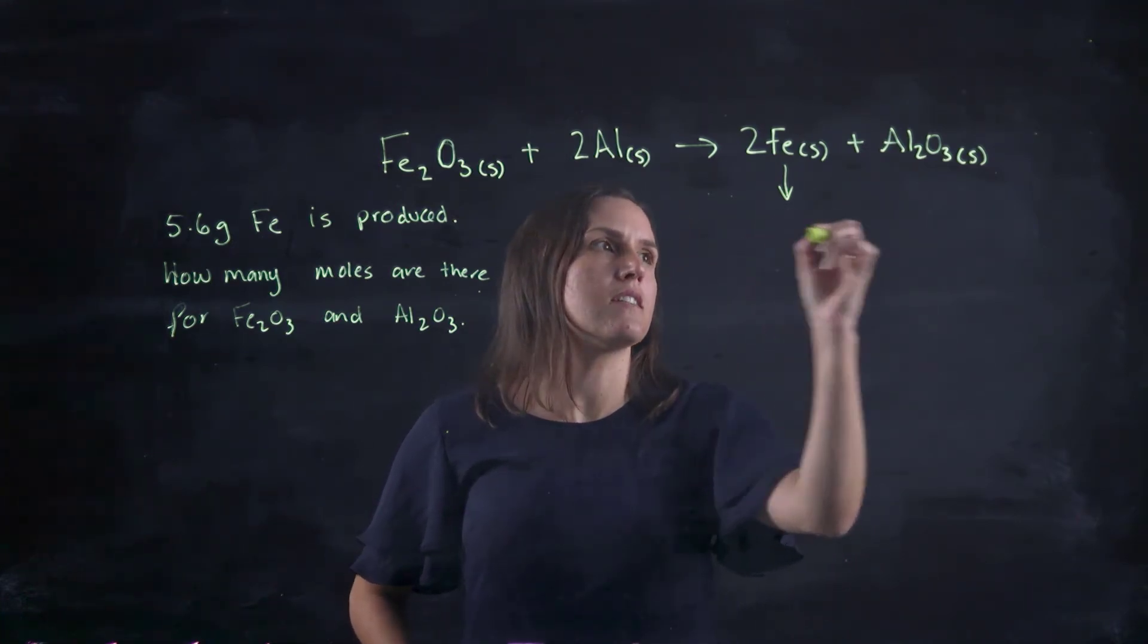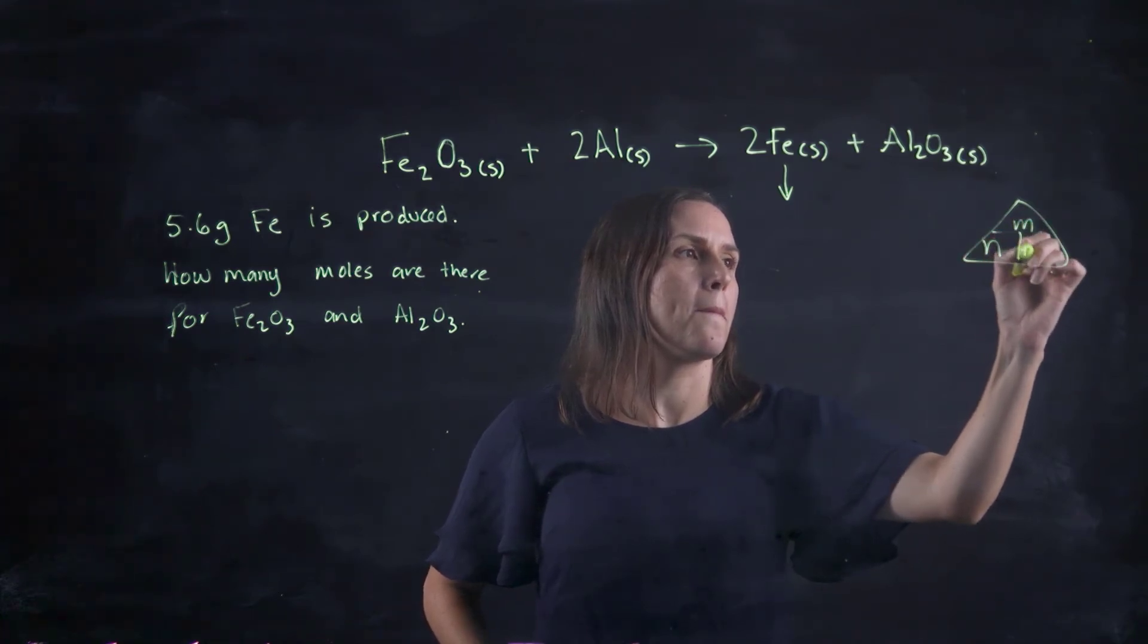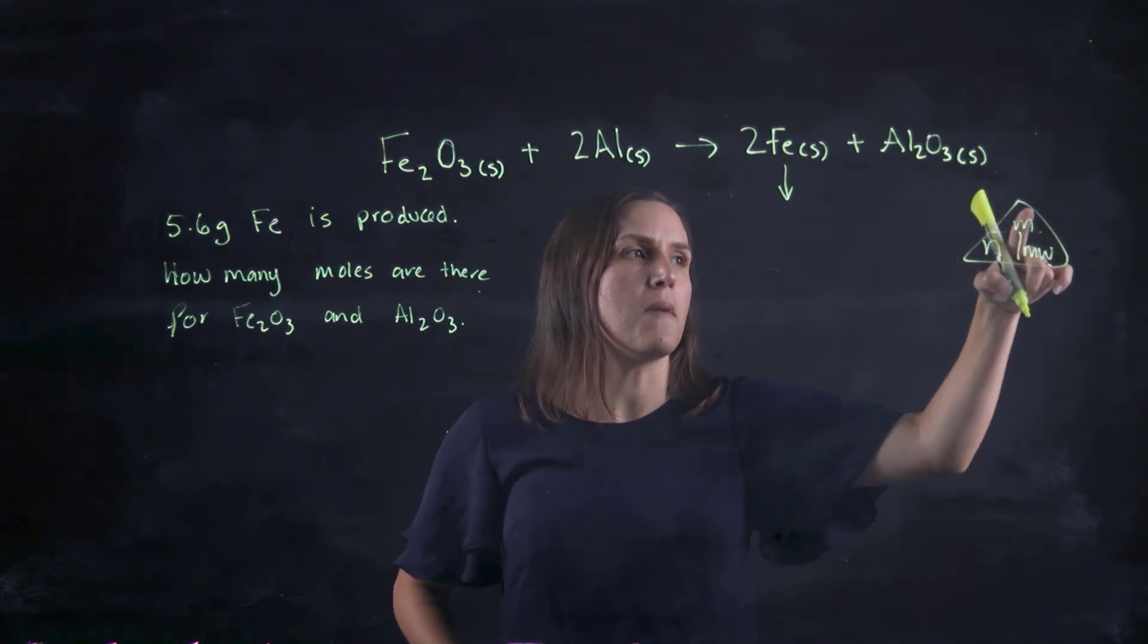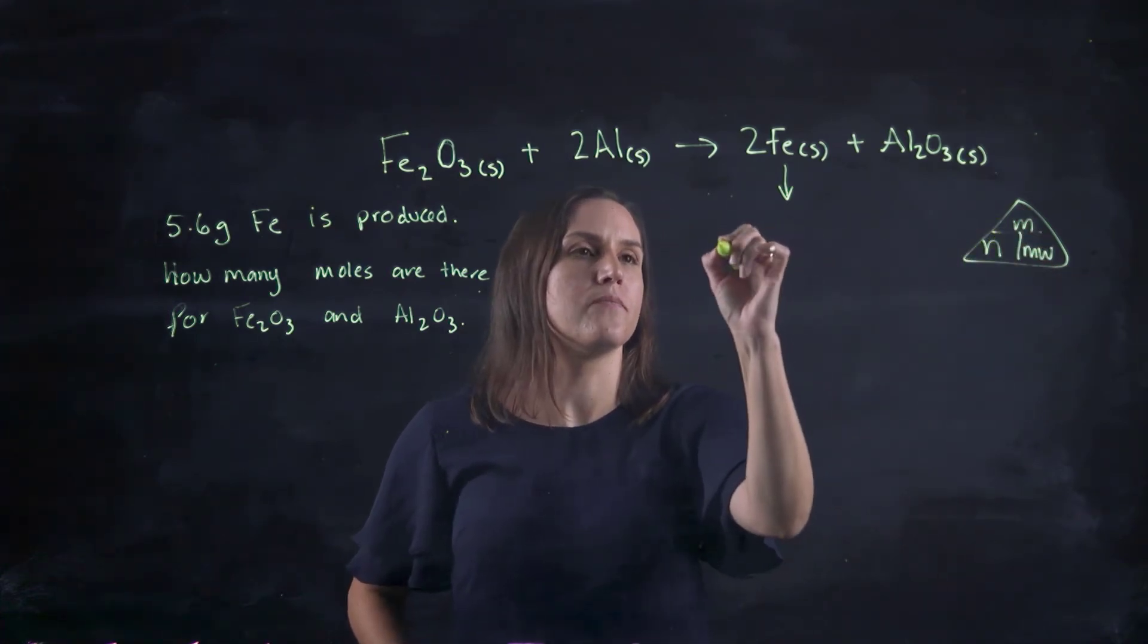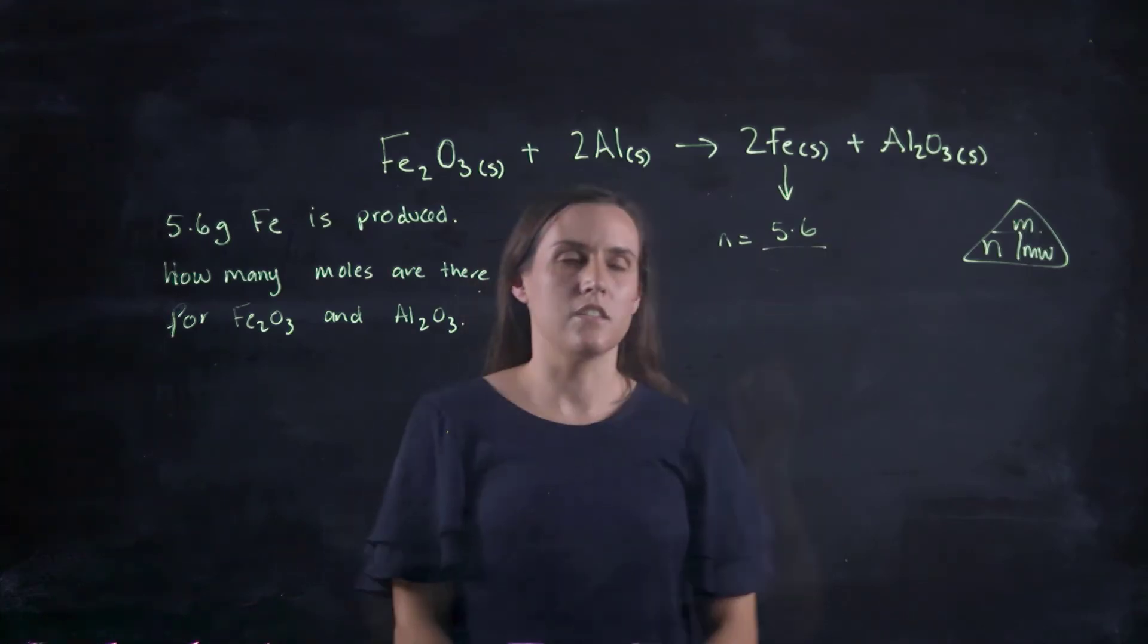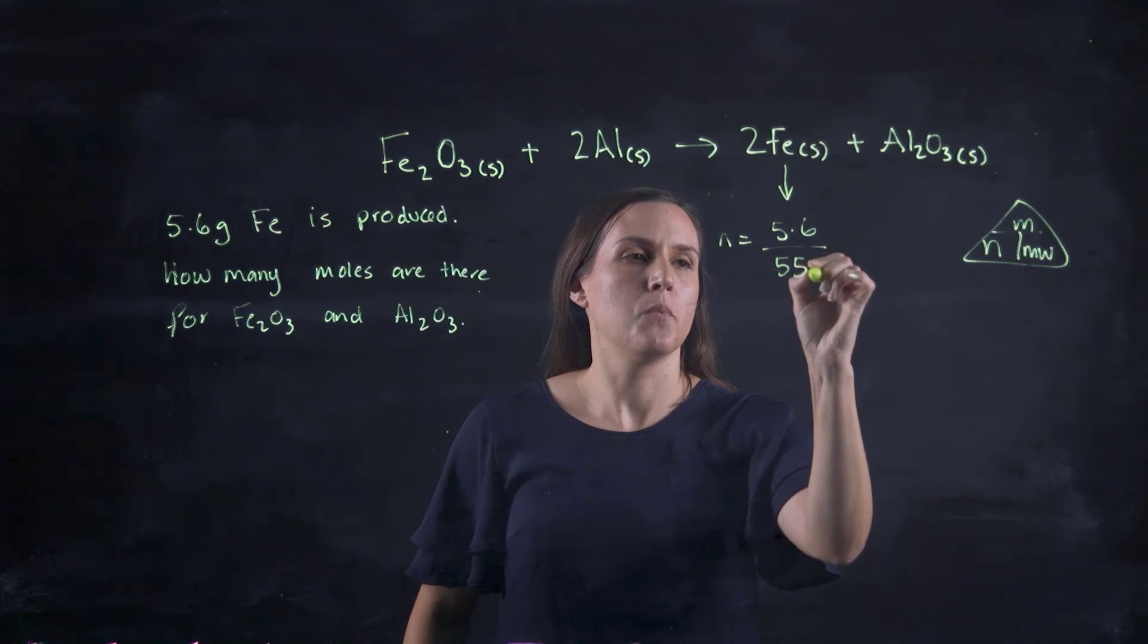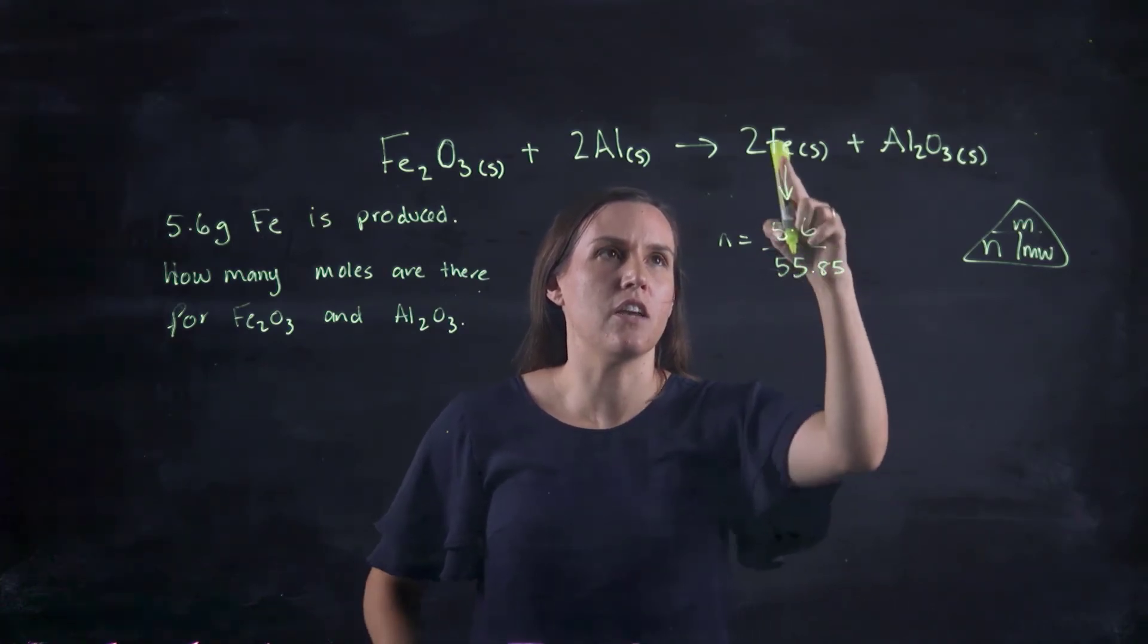So 5.6. So remember our triangle. So the number of moles is the mass divided by the molecular weight. So the molecular weight is 55.85 for each Fe.